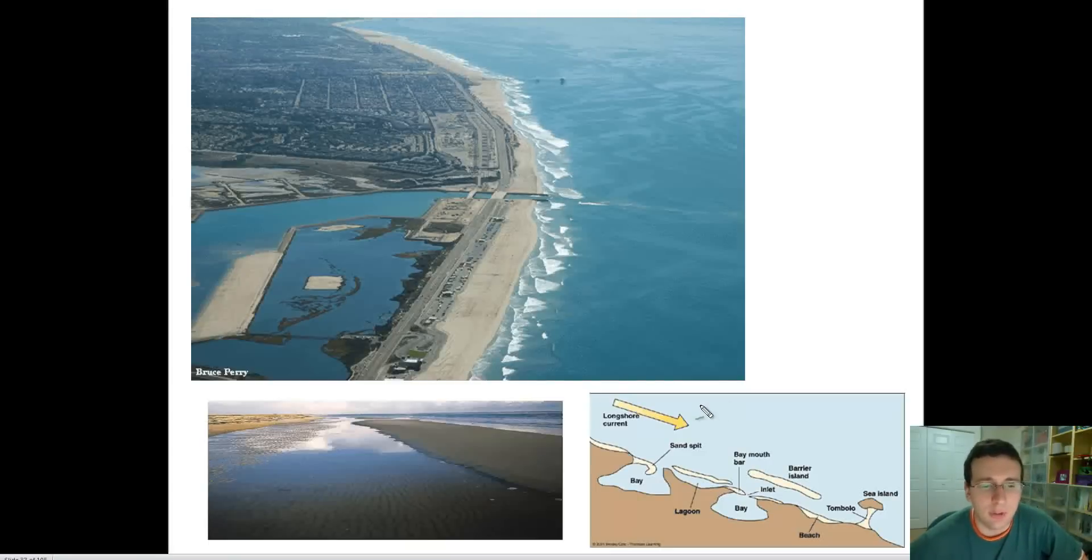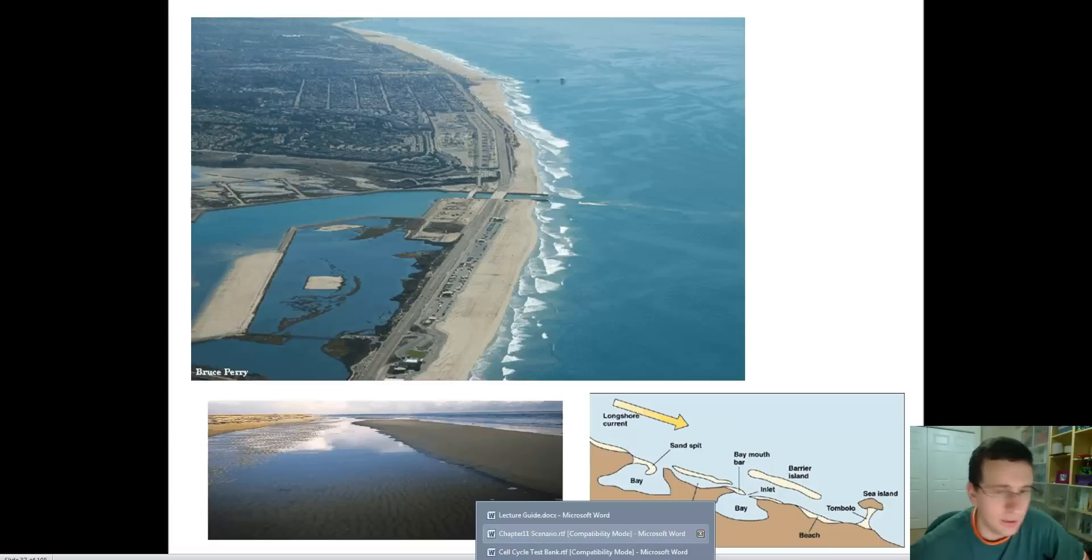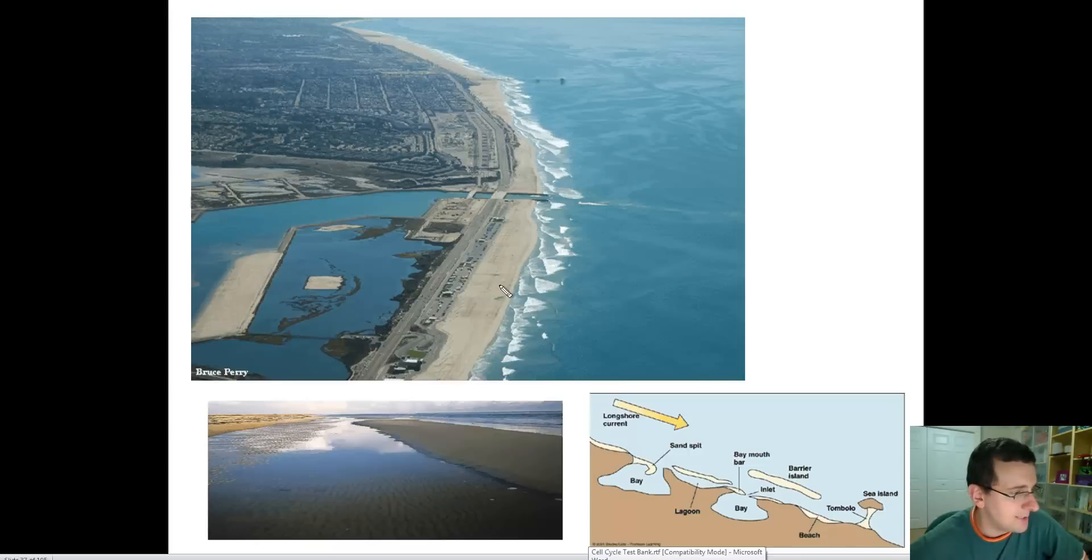So we're going to start where we left off, talking about how longshore currents help facilitate the formation of the new coastline. As you can see here, you see the formation of this what we call a sand spit. This right here is a sand spit.